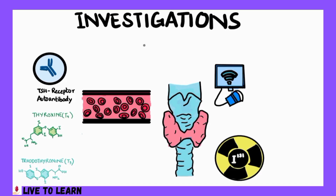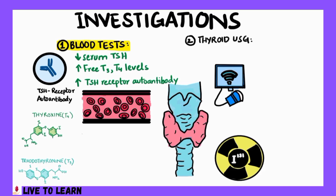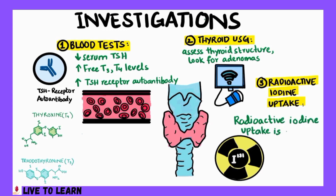Important investigations for Graves' disease include a thyroid function test, which will reveal decreased serum TSH and increased levels of free T3 and T4. TSH receptor autoantibody levels will also be elevated. A thyroid ultrasound helps assess the thyroid structure to look for adenomas. Radioactive iodine uptake tests involve administering a small amount of radioactive iodine, and the amount taken up by the thyroid is measured with a scanning camera. The radioactive iodine uptake is elevated in Graves' disease due to an overactive thyroid.